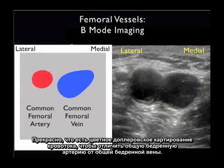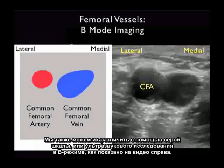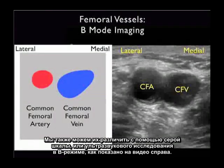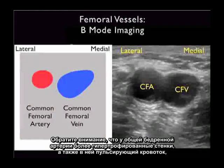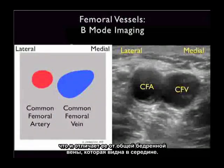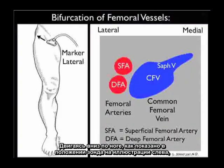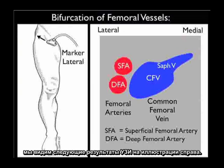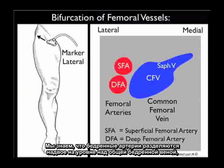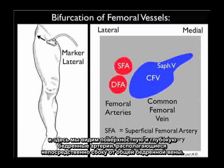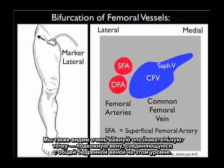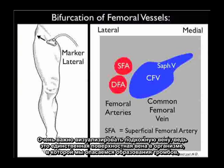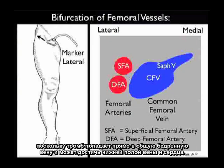While color flow Doppler is very helpful to differentiate the common femoral artery from the vein, we can also use grayscale or B-mode sonography. The common femoral artery has more hypertrophic walls and pulsatile flow, differentiating it from the common femoral vein seen medially. Continuing down the leg, the femoral arteries bifurcate at a level above the common femoral vein — we see the superficial and deep femoral arteries just lateral to the common femoral vein. It's important to visualize the saphenous vein as it's the only superficial vein we worry about for clot formation, as it goes directly into the common femoral vein and can propagate up into the IVC and into the heart.